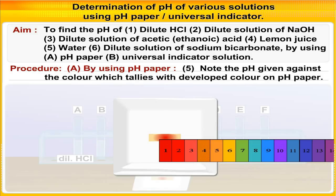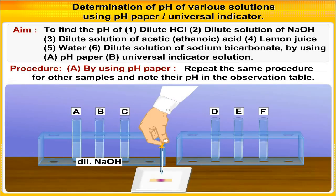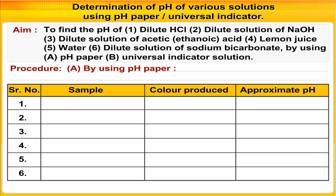Observe the color developed on the pH paper and compare it with the colors in the chart on the cover of the pH paper booklet. Note the pH given against the color which tallies with the developed color on the pH paper. Now repeat the same procedure for other samples and note their pH in the observation table.